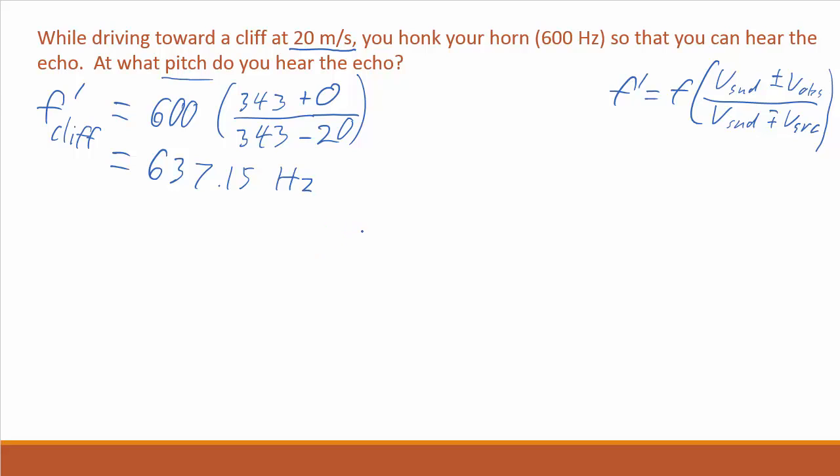Now, that means when it gets echoed, it bounces off the cliff and the frequency doesn't shift on the bounce, on the reflection. But this is the sound wave that's coming toward you. And if you were at rest, so say you honked and stopped the car really fast and the cliff is really far, and by the time the echo got back to you, this is what you would hear. Or maybe a simpler situation would be somebody standing outside the car as you were driving by. They would hear this frequency for the echo off the cliff. But you are moving toward that echo.